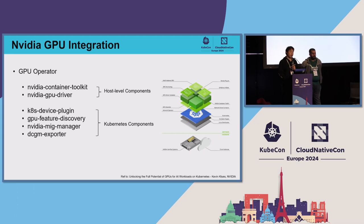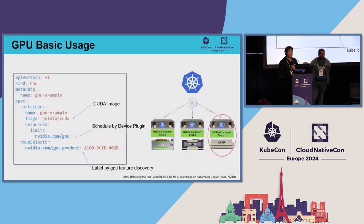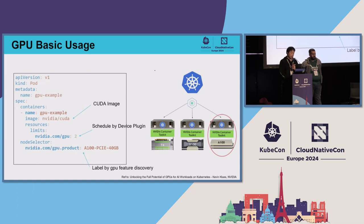There are many sessions by NVIDIA at this KubeCon. The basic GPU usage: in a Pod spec, you can use a CUDA image, set the resource limit for GPU, and it will be scheduled by the GPU device plugin. You can also declare a node selector with a GPU type label applied by node feature discovery, so the pod gets scheduled to the right machine.